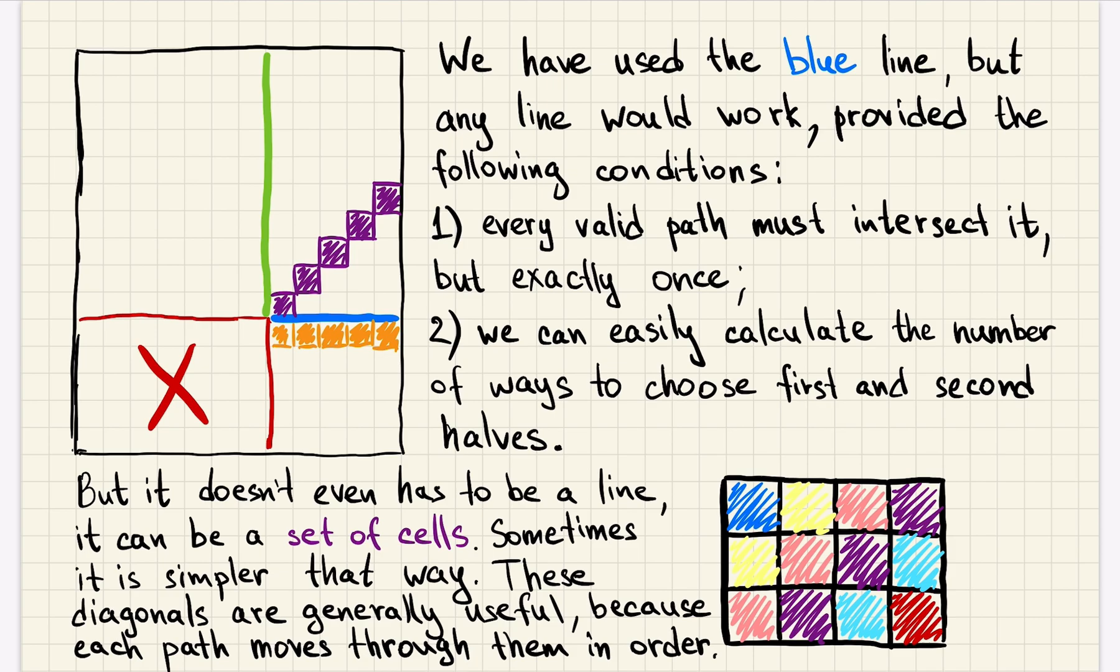In this particular problem, it doesn't matter whether we are choosing the line we should intersect or the set of cells we should visit, but in some problems it might be easier to work with a set of cells because we don't have to worry about those intersections step. We can just say, okay, for a given cell, we leave it, visit it, and that just splits the path into two parts.